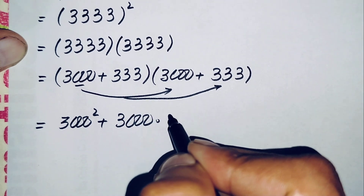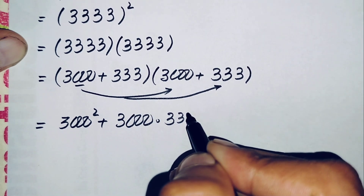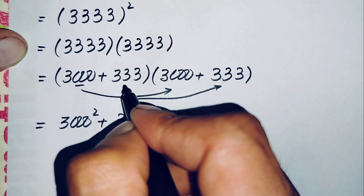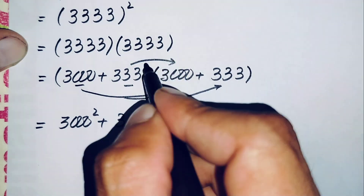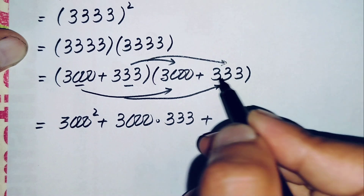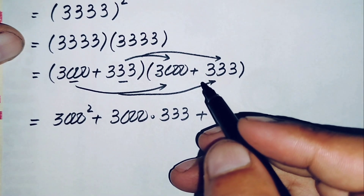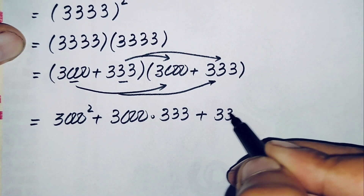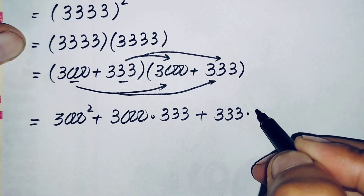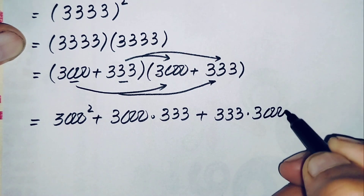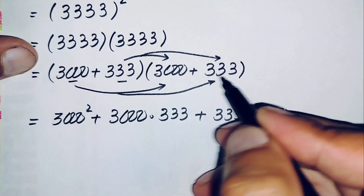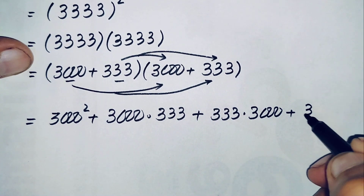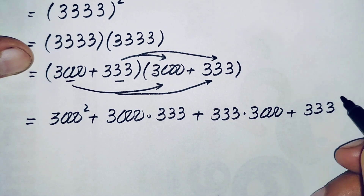Then we multiply 333 times 3,000, and finally 333 times 333, which gives 333 squared. So the full expansion is: 3,000 squared plus 3,000 times 333 plus 333 times 3,000 plus 333 squared.